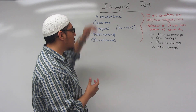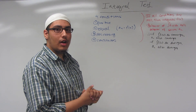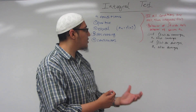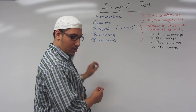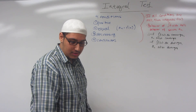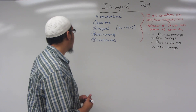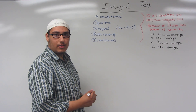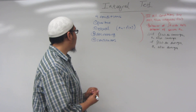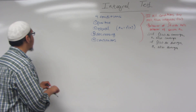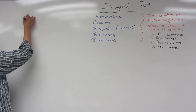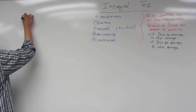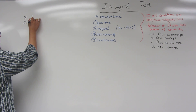Now, the integral test — in order to use it to determine if a given series converges or diverges, our series has to meet four conditions. For example, let's take the series sigma, n equals 1 to infinity, of 1 over n.